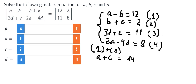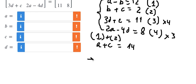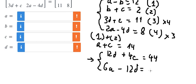Next, for equation number three we multiply by four, and this one by three. So now we have 12d plus 4c equals 44, and 6a minus 12d equals 24. Now we add these together. The 12d minus 12d cancels, so we have 6a plus 4c equals 68.